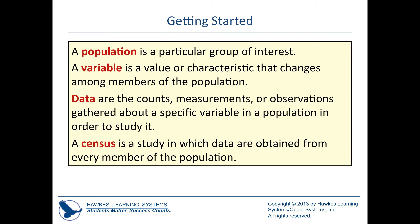A variable is something that varies — it varies from person to person. More formally, it's a value or characteristic that changes among members of the population. For example, if we look at gender in our class, that's something with variation, so that's a variable. But the professor of your class is not a variable because it's not going to change throughout the semester.